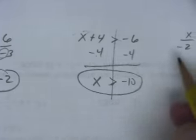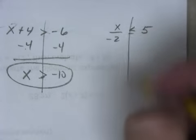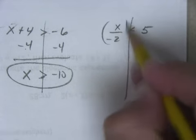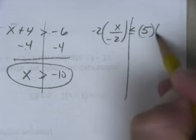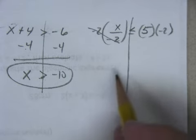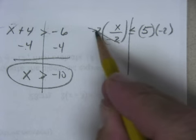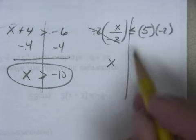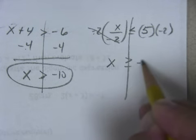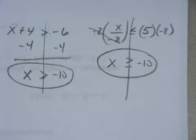I have to multiply by negative two. The negative two's cancel out. X is now, here I multiply by negative, so I have to switch it. So it's greater than or equal to negative ten.